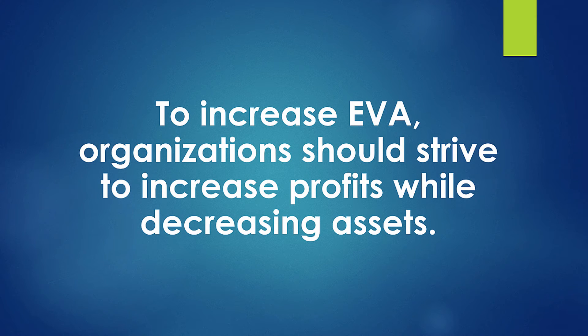This all comes back to productivity, because we're dealing with profit versus the assets used to create that profit. EVA is not a productivity metric per se because it's not a ratio, but it is directly related to productivity — the higher the productivity, the higher your EVA is going to be, and the better your income statement is going to look. EVA teaches us the central concept of business: to get better EVA, what you want to strive for is to increase your profits while decreasing your assets.